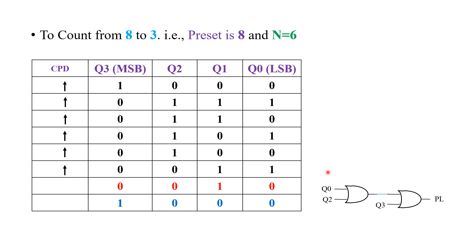Let us make a cross verification — does this going to work at this particular instant. Q0 and Q2 are equal to 0, so output of this gate will become equal to 0. That 0 will be given to the second NOR gate along with Q3. Q3 is also equal to 0, so 0 and 0 — output is 0. PL will be fed with the value 0, which is going to activate the preset in an asynchronous manner.